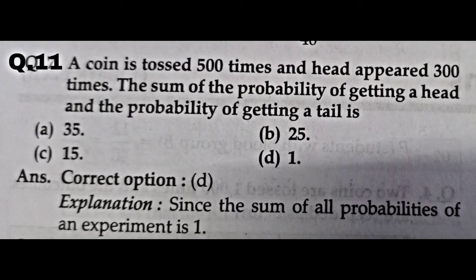Moving to question number 11. A coin is tossed 500 times, head appears 300 times. The sum of the probability of getting head and the probability of getting tail is what? We know that probability of an event plus probability of not getting that event always equals 1. So the sum of probability of getting head and tail is always 1. The correct option is D.